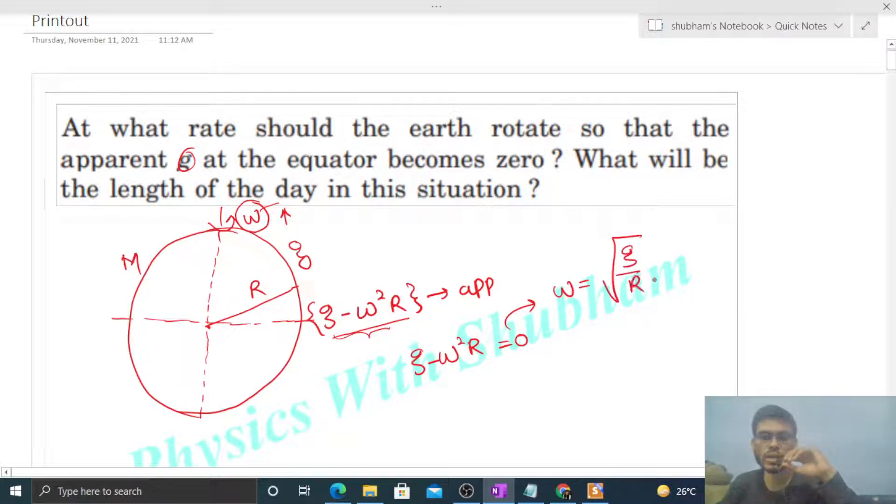Just put the value: g equals 9.81 meters per second squared, and capital R, that is the radius of Earth, is 6400 kilometers, which is in meters. So from here we can calculate the value of omega.